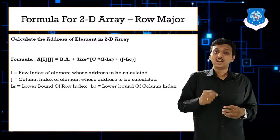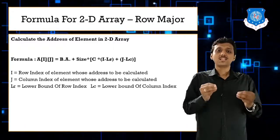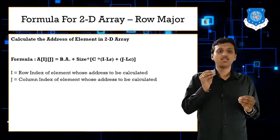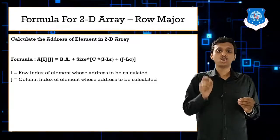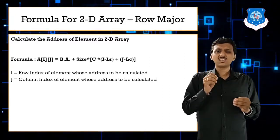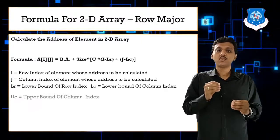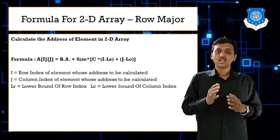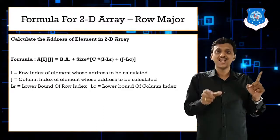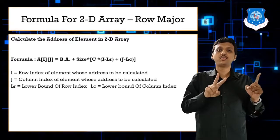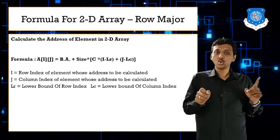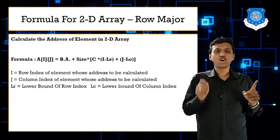Size means the size of the element, not the array. If we have an integer type array, size will be 2; for float it will be 4. C means total number of columns. LR stands for lower bound of row and LC stands for lower bound of column, since we now have two different indexes — one for rows and one for columns.